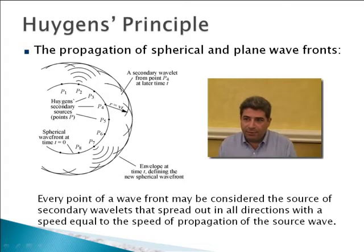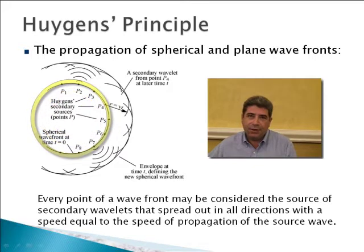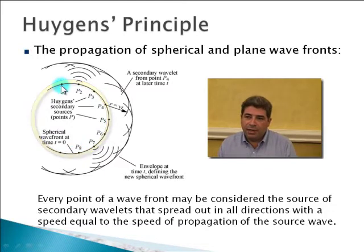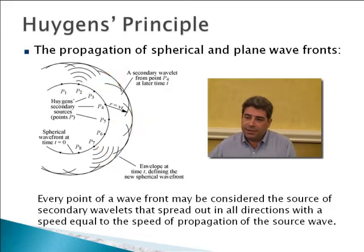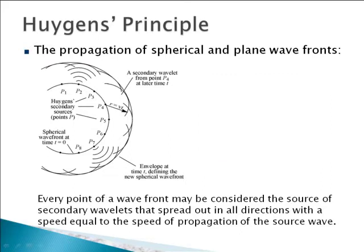Let's begin with Huygens' Principle. Huygens came up with the theory that when you have a point source, every wavefront away from that spherical point source — in this case shown with points P1 through P8 — all of these points can be considered as secondary sources of radiation, each one coherent with the others. As this wavefront emits these secondary sources and they move away from the primary point source, they create other wavefronts.